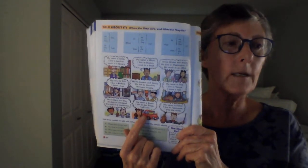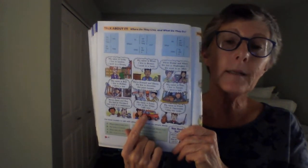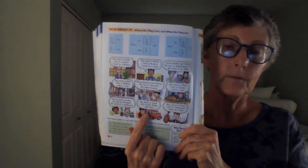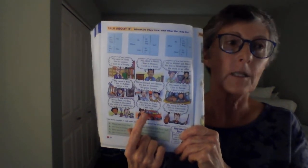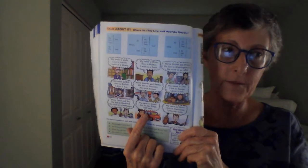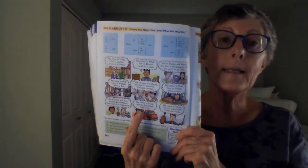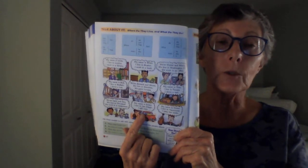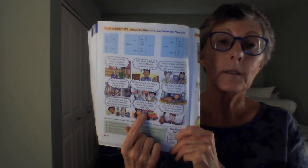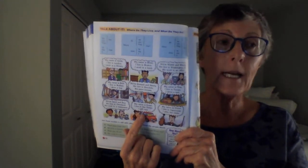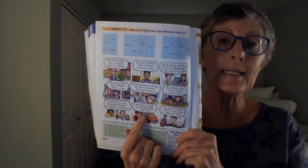Where does Susan live? Correct. She lives in San Diego. What does she do? Correct. She sells cars.